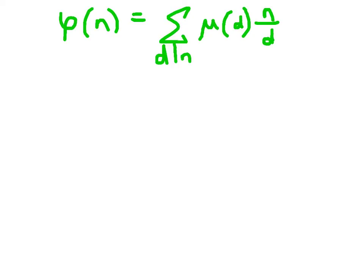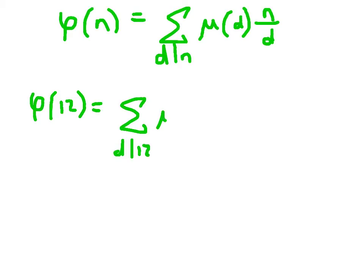The formula on the screen now, linking phi to mu — linking the Möbius function to the Euler-Totient function — tells us that the number of integers relatively prime to n equals the sum, as d divides n, of mu of d times n over d. Let's have a look at that working with n equals 12. Phi of 12 should equal the sum as d divides 12 of mu of d times 12 over d.